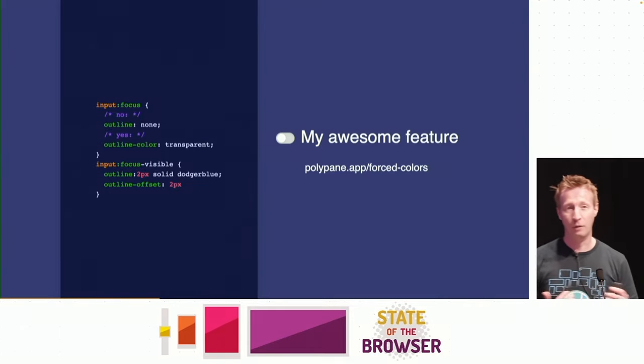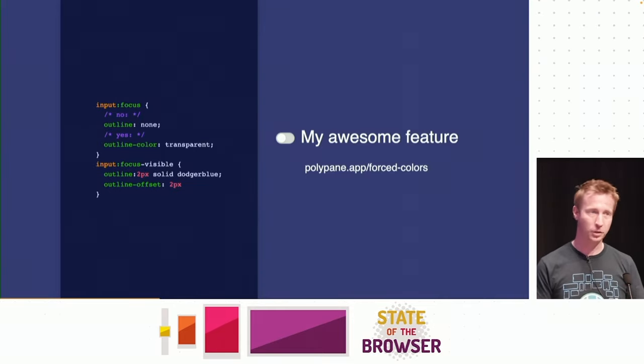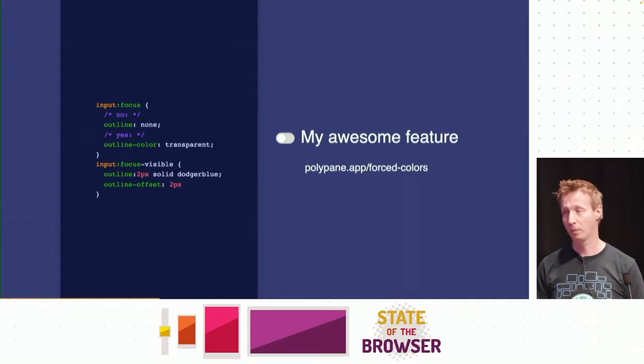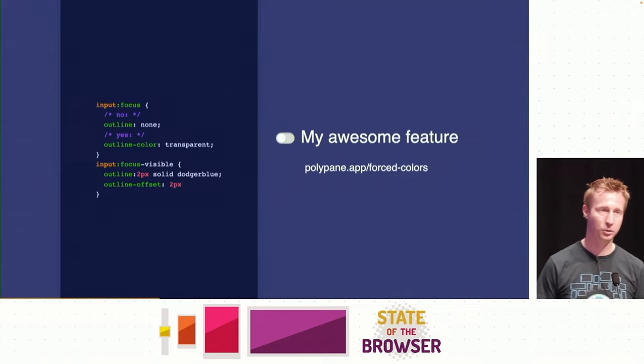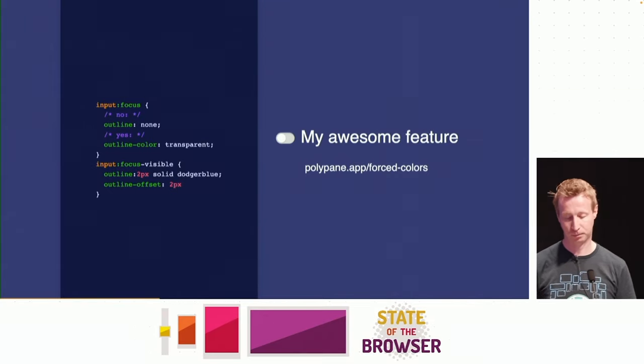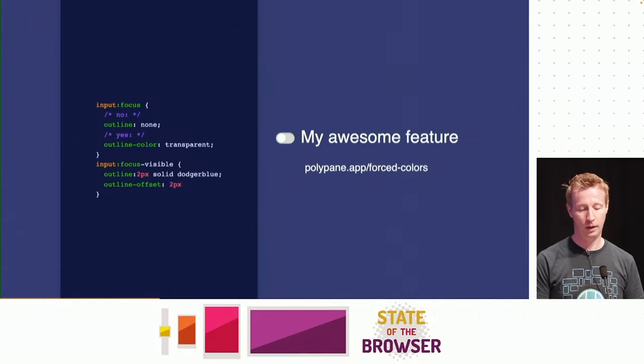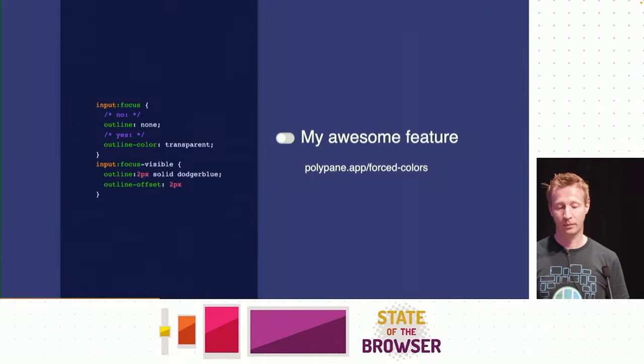Even though we're all used to writing `outline: none`, I want you to start writing `outline-color: transparent` instead. The result will look the same — with `outline: none` the outline isn't there because it's not there, and with `outline-color: transparent` it isn't there because it's invisible. But the difference is that when a user uses high contrast mode in Windows or forced colors, that outline becomes visible again for people who want higher contrast. I wrote a very long blog post about forced colors on polypane.app/forced-colors. And with this, we've done everything you want for a custom toggle without touching any JavaScript.